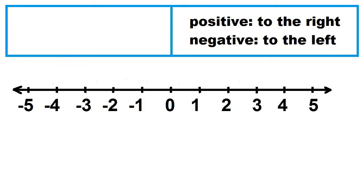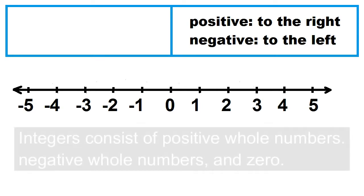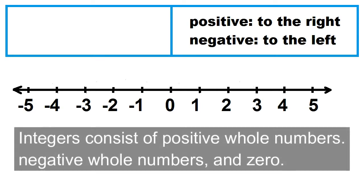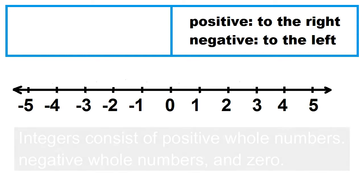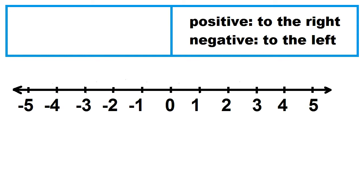Let's define first the set of integers. Integers consist of positive whole numbers, negative whole numbers, and zero. On the number line, positive integers are to the right of zero. Negative integers are to the left of zero. Zero is neither positive nor negative.